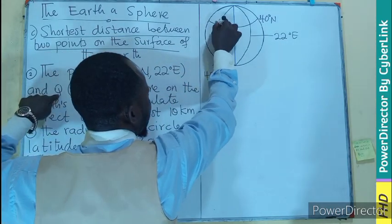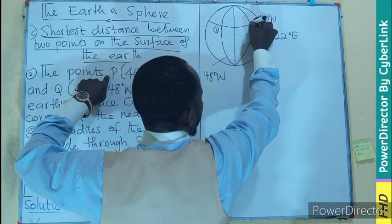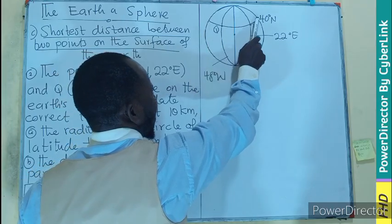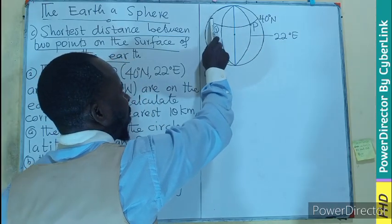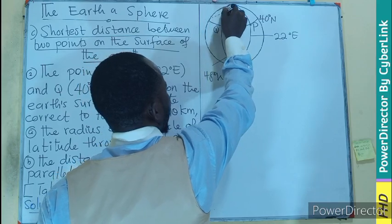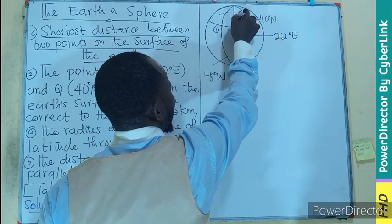40, 48, so Q. Then P is 40, 22. So P is here. So if this is the latitude, don't forget, it's going to have a counterpart at the other side. So their center is going to be here.